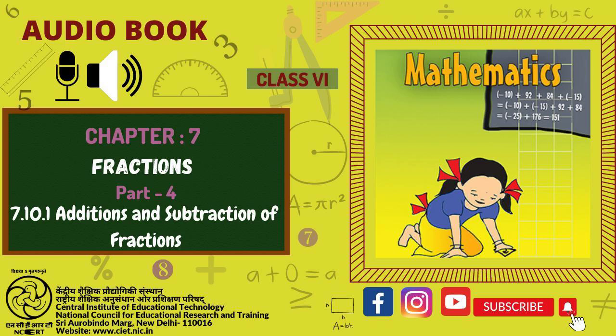What do we learn from the above examples? The sum of two or more like fractions can be obtained as follows: Step 1, Add the numerators. Step 2, Retain the Common Denominator. Step 3, Write the fraction as Result of step 1 divided by result of step 2.